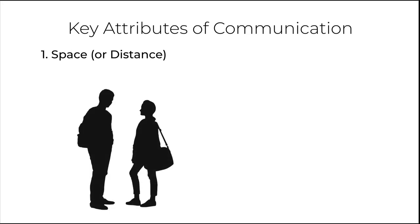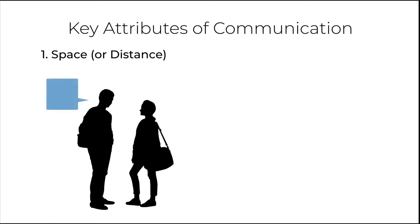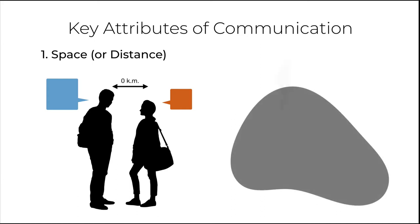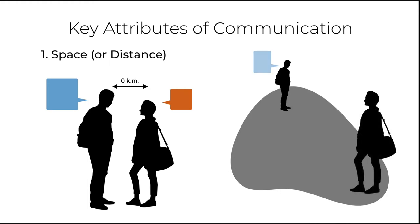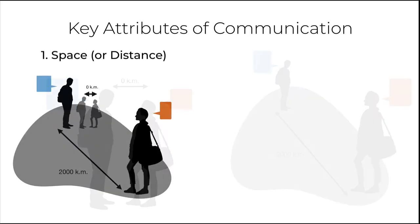Let's say you and your friend are standing close by and having a conversation. In this case, the distance between the person communicating and the person listening is almost zero. But if you are in Delhi and your friend is in Chennai, the distance is a few thousand kilometers. The first idea — space or distance — is understanding if the communication is between people nearby or far away.